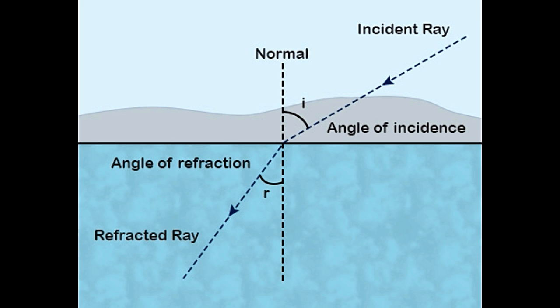This change of speed bends the light as it travels through the different mediums, causing the angle of refraction to be different to the angle of incidence.